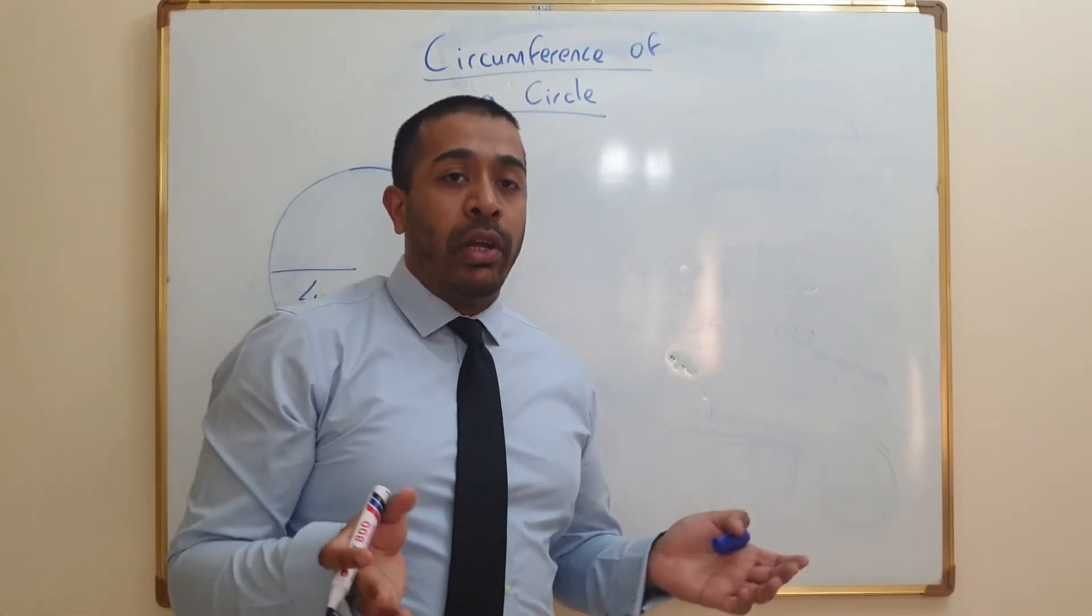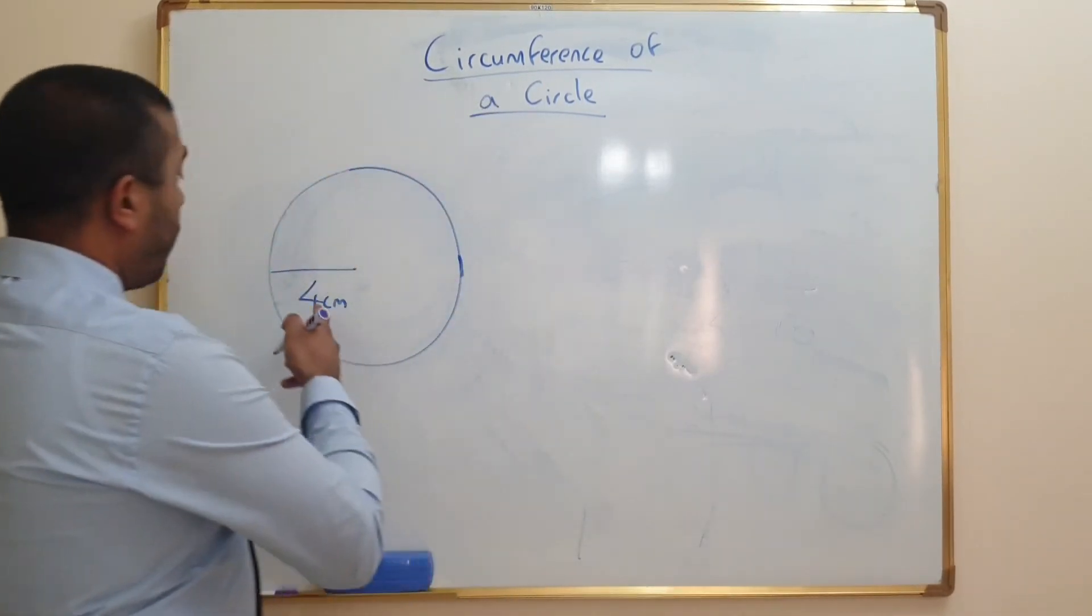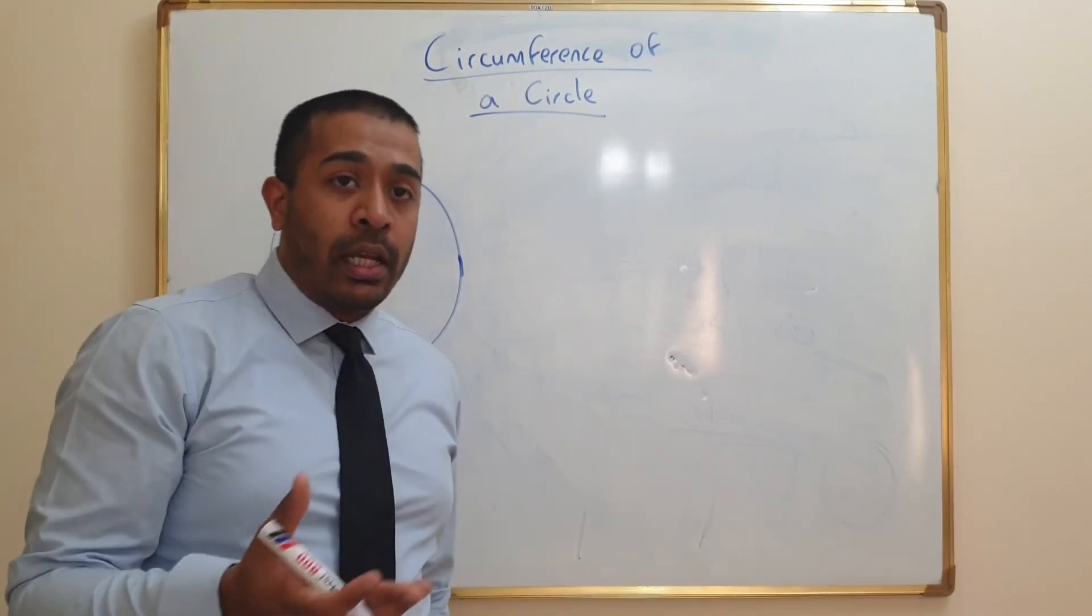Let's say for instance we are only given the radius to work with. If the radius is 4 centimeters, all you have to do is double that to get the diameter.